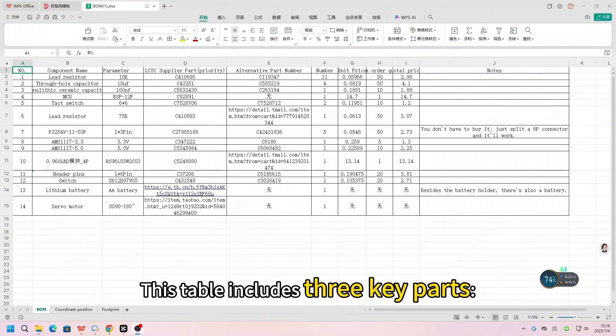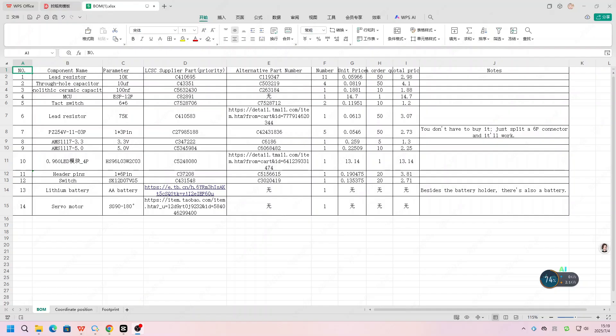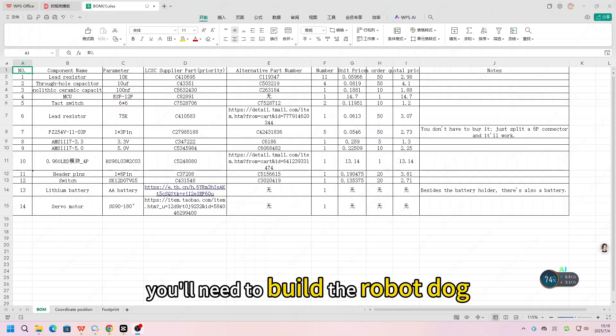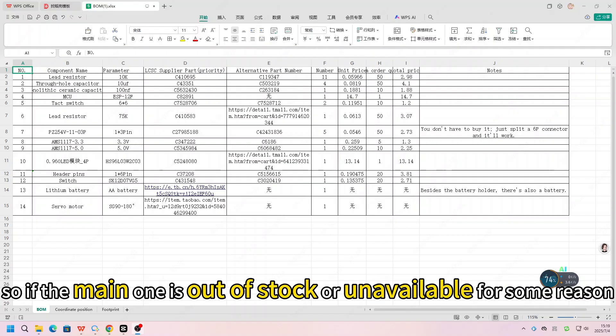This table includes three key parts, the BOM, Component Placement Coordinates, and Footprint References. Let's start with the BOM. The bill of material lists everything. You will need to build a robot dog. For most of the components, we've even added backup options, so if the main one is out of stock or unavailable for some reason, you can easily switch to an alternative.